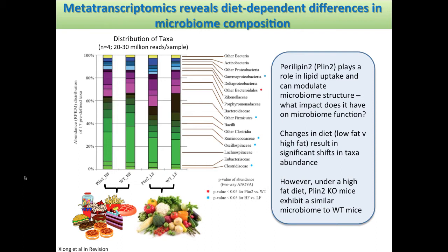We designed an experiment with four mice in each of four groups: a PLIN2 knockout and wild type, each exposed to a high-fat diet and a low-fat diet. We took cecal contents and subjected them to metatranscriptomics, generating about 20 to 30 million reads per sample. We used these metatranscriptomic reads — not 16S data — to look at taxonomic abundances by examining the messenger RNAs. When we do the statistical comparisons, we find that diet has a significant effect, and you can see shifts in microbiota associated with diet, as we might expect.